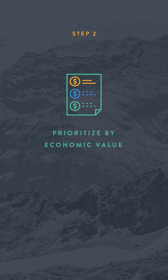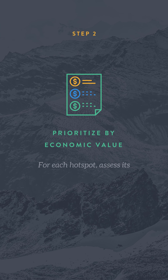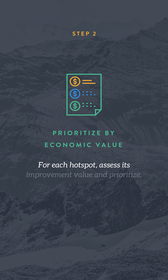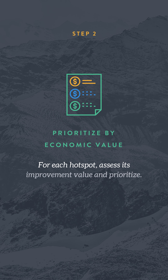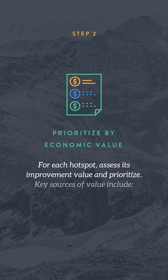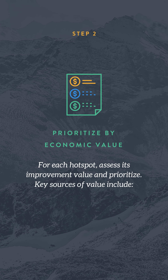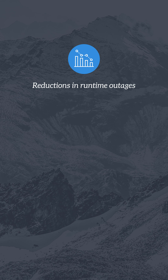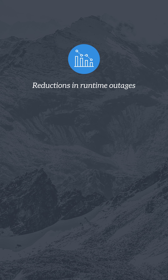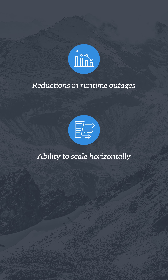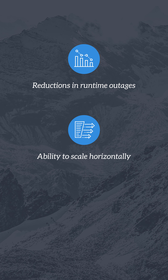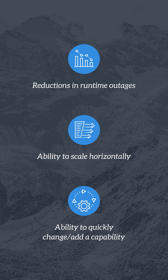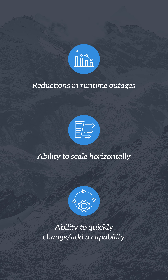Step two: prioritize by economic value. For each hotspot, assess its improvement value and prioritize. Key sources of value include reductions in runtime outages, ability to scale horizontally, and the ability to quickly change or add a capability.